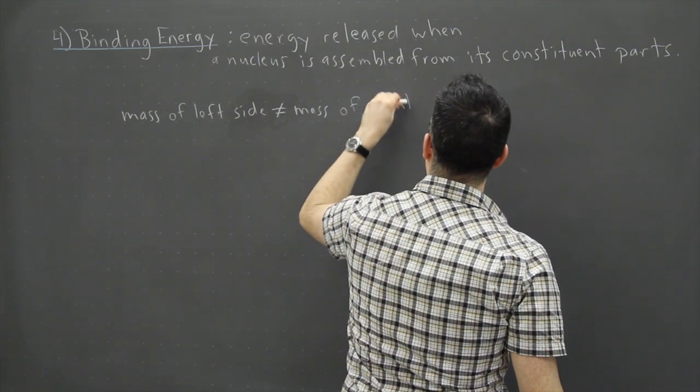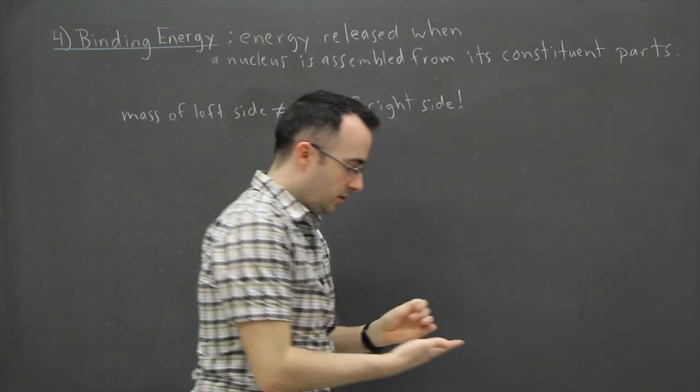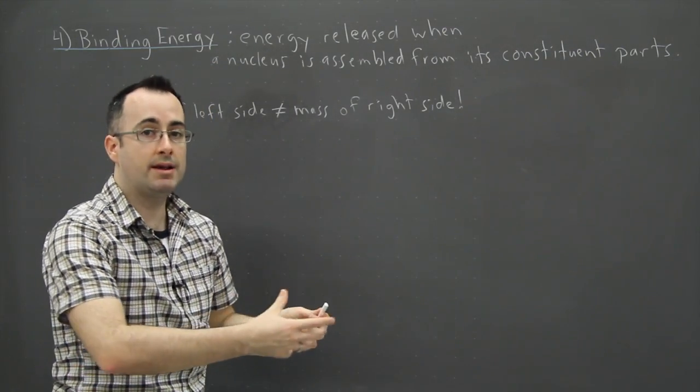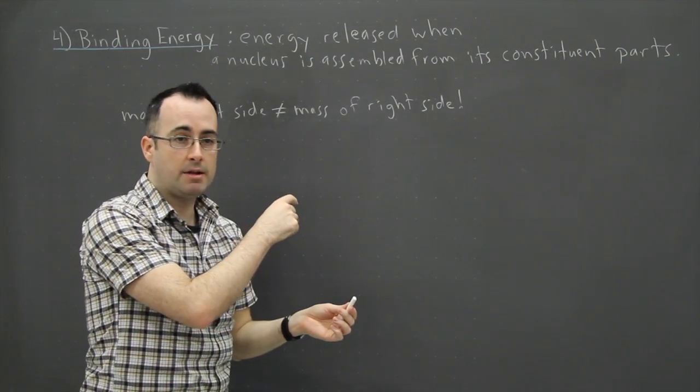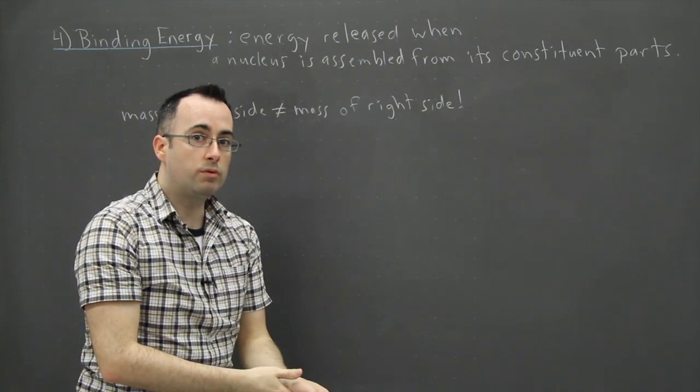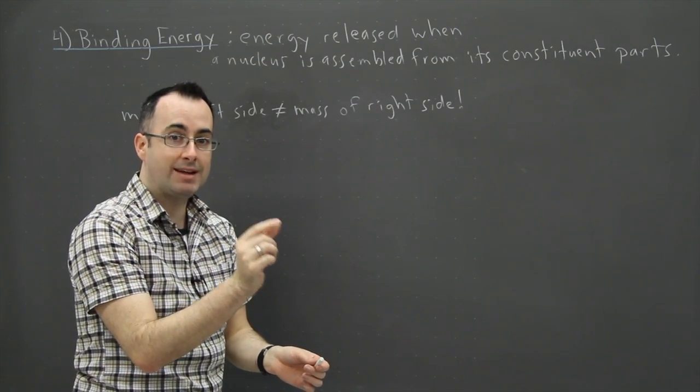There's something missing. In fact, if you're looking at one of these decay equations and you actually measured the mass of the left hand side and then the mass of all the different stuff on the right hand side, the masses won't exactly even out. There's going to be a very slight amount of mass missing.